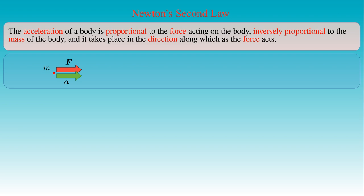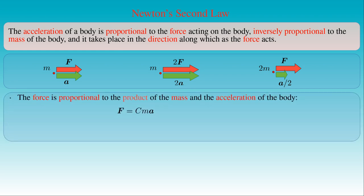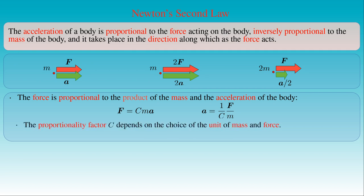Both the force F and the acceleration A of the body point in the same direction. By virtue of the second law, if we apply two times greater force to the same point mass, then its acceleration is two times greater. The second law also claims that if the same force is applied to a point-like body with mass 2M, then the acceleration of the more massive body is half of the original one. The force is proportional to the product of the mass and the acceleration. That is, force F equals some proportionality factor C times mass M times acceleration A. We will choose units such that C equals 1.